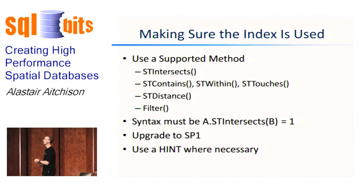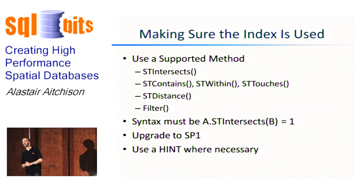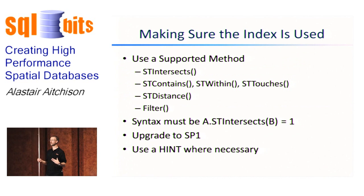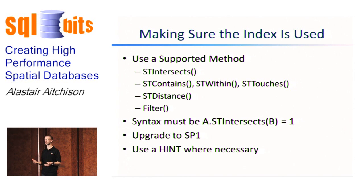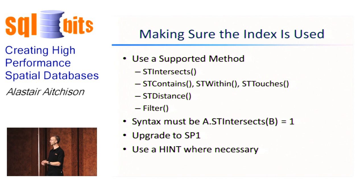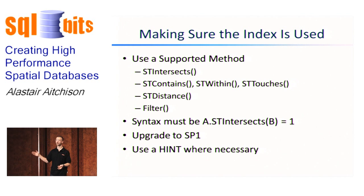The first thing you need to do is use a supported method. Normally in SQL Server, when you create an index on a table, you don't need to worry too much about how SQL Server uses it — the query optimiser chooses the least-cost plan. It's not quite the same with spatial. Only certain spatial methods can make use of the index. STIntersects, which I've been using for all these examples, can, and so can the specific subtypes of intersection query — contains, within, touches.